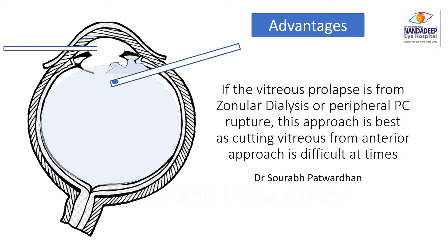Also, if the vitreous has prolapsed from zonular dialysis or a very peripheral posterior capsule rupture, this is a better approach as cutting the vitreous from the anterior approach is sometimes difficult and you may end up injuring the posterior capsule or the bag more. In these situations, parsplana anterior vitrectomy may have an edge over the limbal route anterior vitrectomy.